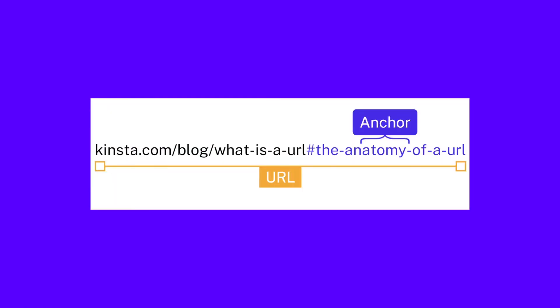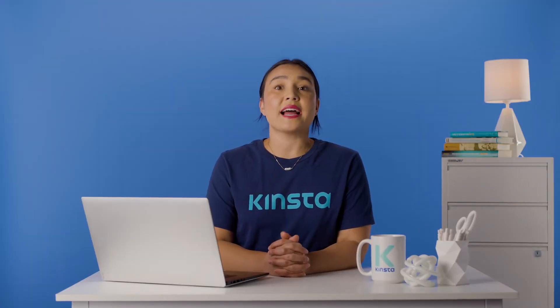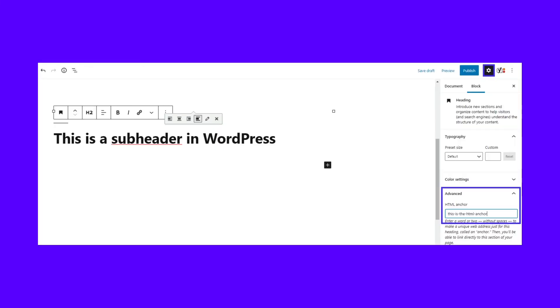The anchor is anything that comes behind a hash sign. It's a page-specific link that leads to a specific part of the page. This URL will take you to the 'anatomy of a URL' part of this page because it's an anchor link, or jump link, to the ID of that specific subheading. To use anchor links, you need to add an ID to the HTML tag that you want to link to. The actual code for the headline of this H2 section looks like this in plain HTML.